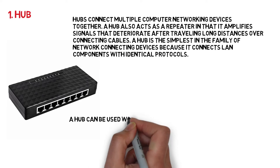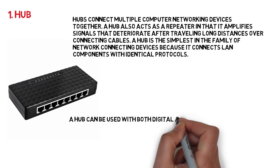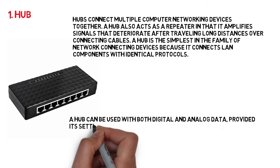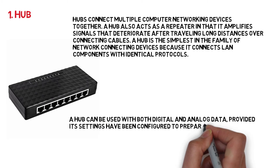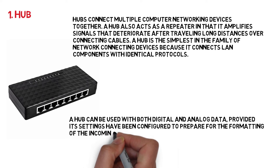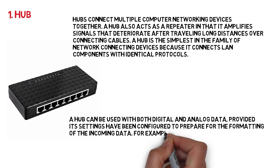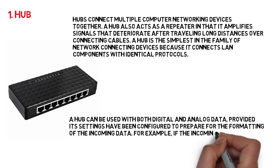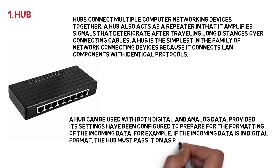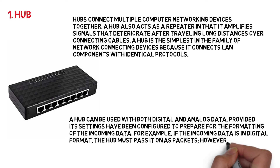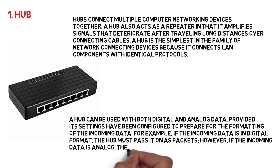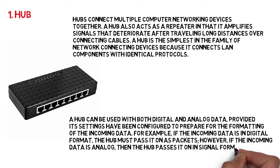A hub can be used with both digital and analog data, provided its settings have been configured to prepare for the formatting of the incoming data. For example, if the incoming data is in digital format, the hub must pass it on as packets; however, if the incoming data is analog, then the hub passes it on in signal form.